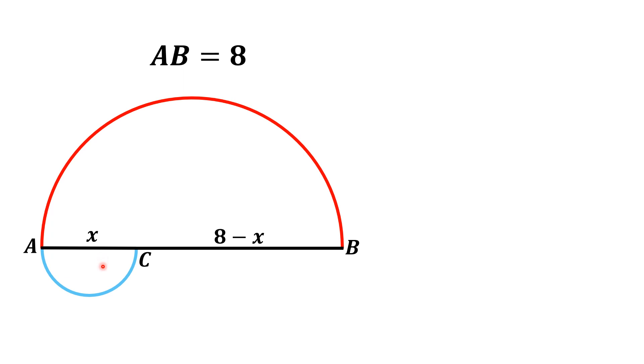We know that the length of this semicircle is equal to half of the circumference of a circle. The formula for the circumference length is πd, where d is the diameter.